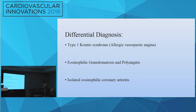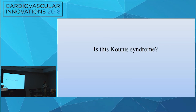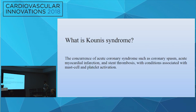The differential diagnoses we were considering: type 1 Kounis syndrome, which is allergic vasospastic angina; eosinophilic granulomatosis and polyangiitis; and isolated eosinophilic coronary arteritis. A definitive diagnosis would need a myocardial biopsy. However, considering the turn of events, the patient was managed medically, shifted to heart failure service, optimized for heart failure, and she improved her LV function and hemodynamic status. The question of a definitive diagnosis through biopsy was deferred.